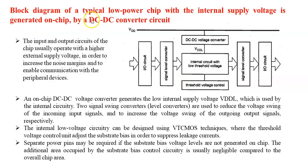This is a block diagram for a typical low power chip with internal supply voltages generated on chip by a DC-to-DC converter circuit, utilizing VTCMOS technology. The internal logic circuit is designed with low VT, that is low threshold voltage transistors. The threshold voltage of the transistor is controlled using the VTCMOS circuit by changing the substrate bias voltage. The DC-to-DC converter reduces the supply voltage VDD to a lower value for low power application, giving a low VDD output.